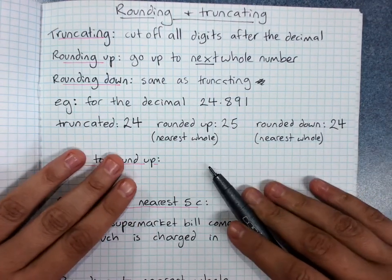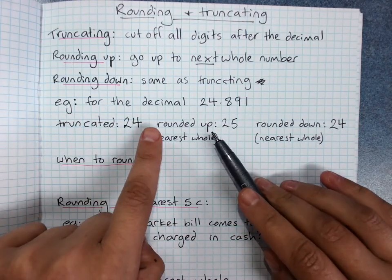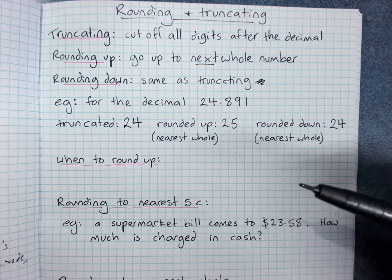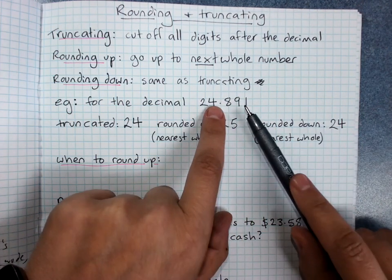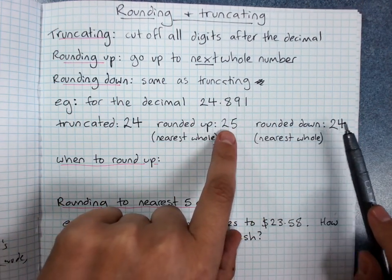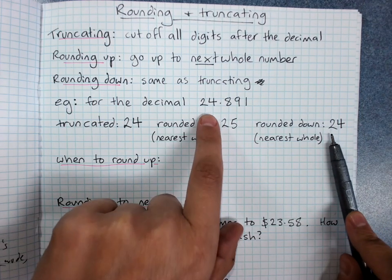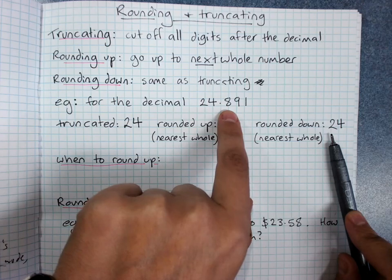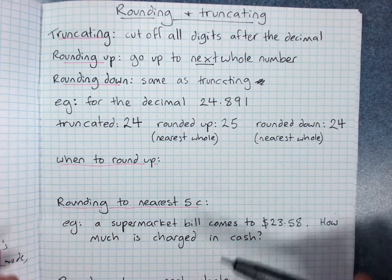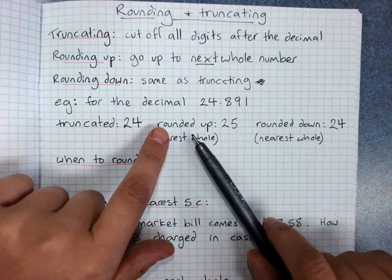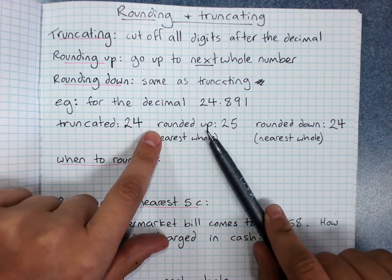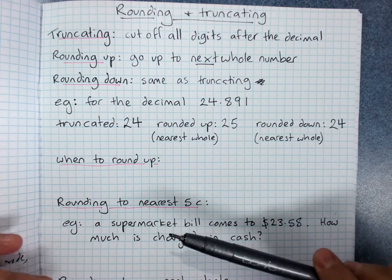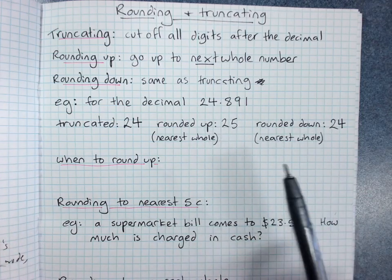Often when we round, we'll talk about not rounding up or rounding down specifically, but rounding to the nearest whole number. Then we'd have to decide between rounding up and rounding down — which one's closest to the original number. So there's a difference between if they tell you to round up, round down, or round to the nearest. If you round to the nearest, you've got to decide.